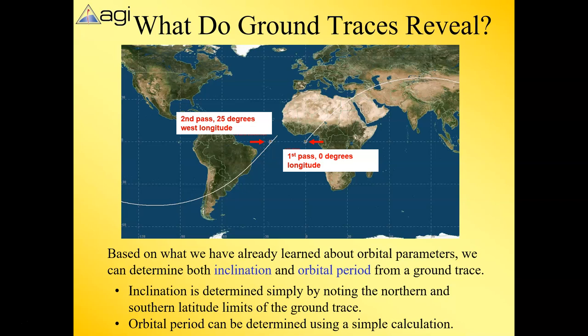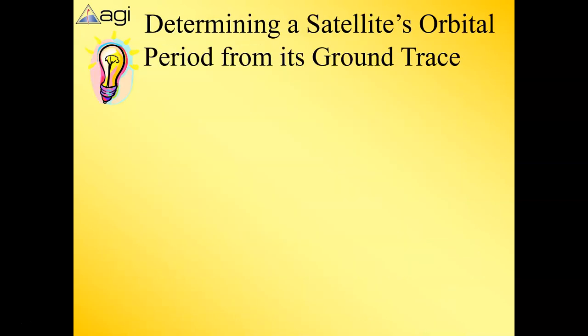Ground traces can tell us not only the inclination, but we can also get the period from it—the orbital period. They're pretty interesting things with good information that we can get. So how do we get the period? Let's take a look at a step-by-step approach.